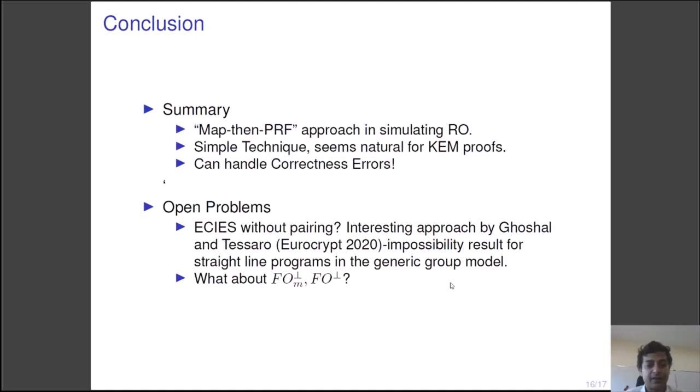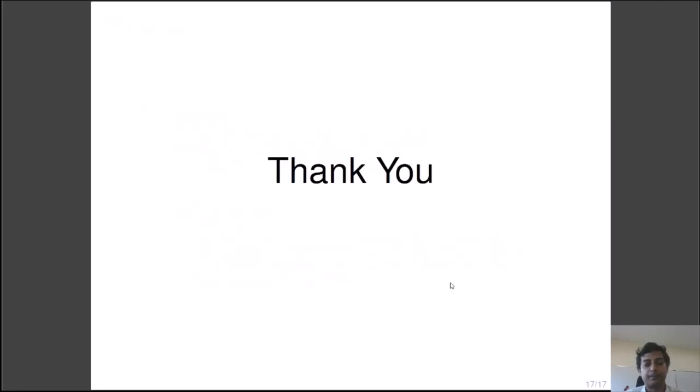The foremost in my opinion is about the case of ECIES where on groups when no pairing is available. In a recent result, there has been an interesting approach by Ghoshal and Tessaro who showed impossibility result for straight-line programs in the generic group model. However, in the general case where the reduction can rewind the adversary or the memory of the reduction can actually depend on the memory of the adversary, the cases are still open. Similar open problems exist for the modules FOM and FOM part and FO part. Thank you.